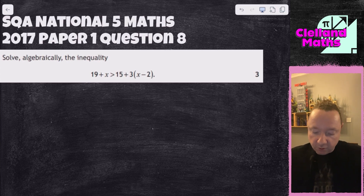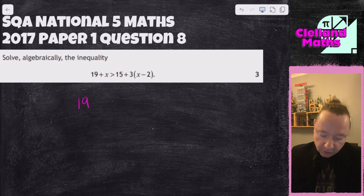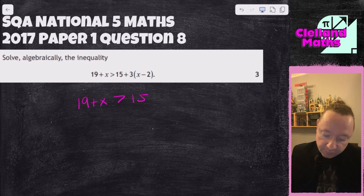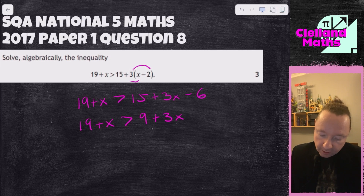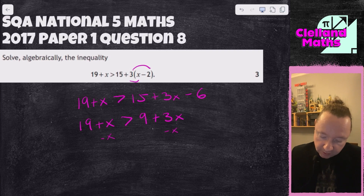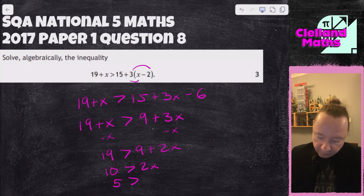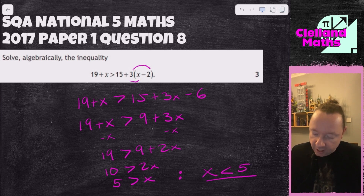SQA National 5 Maths 2017 Paper 1 Question 8: 19 + x > 15 + 3(x - 2). Don't be tempted to do 15 + 3 — expand the bracket first: 3x - 6. So 15 - 6 = 9, giving 19 + x > 9 + 3x. Take away x from both sides: 19 > 9 + 2x. Take away 9: 10 > 2x, so 5 > x. Or if you prefer, flip it: x < 5. And you're done there.